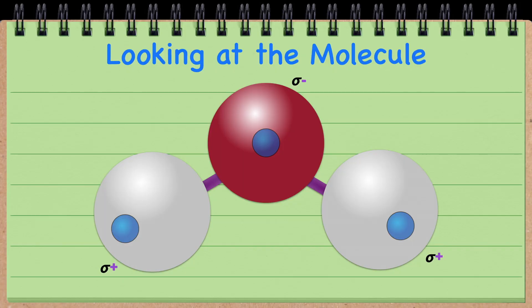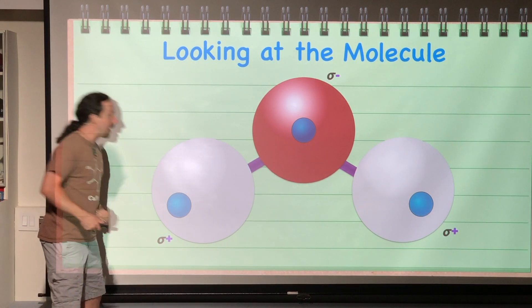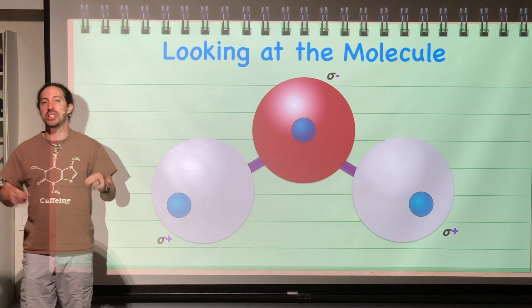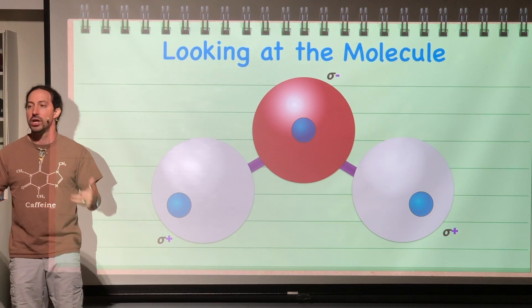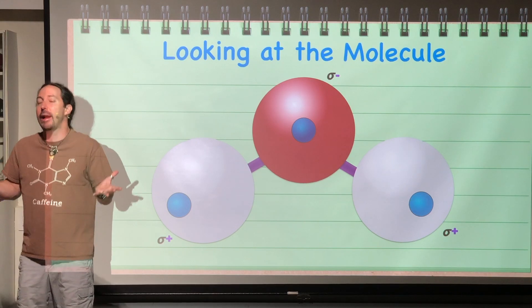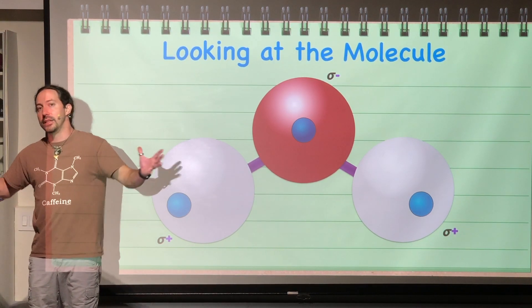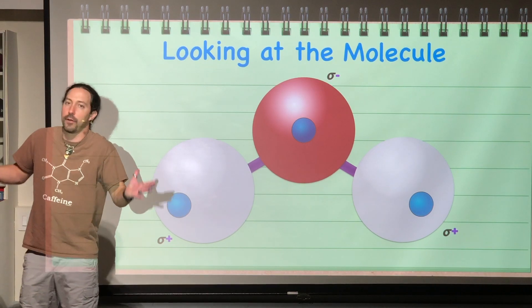They would be able to feel the effect of that positive nucleus greater over here than they would near the top. The top area where the oxygen is, this is going to have a slightly negative charge, because the electrons are pulled more toward the top. On the bottom, the hydrogens would have a slight positive charge because they have the electrons pulled a little bit away from their nucleus. It's not centered around that atom anymore. The electrons are pulled off-center.